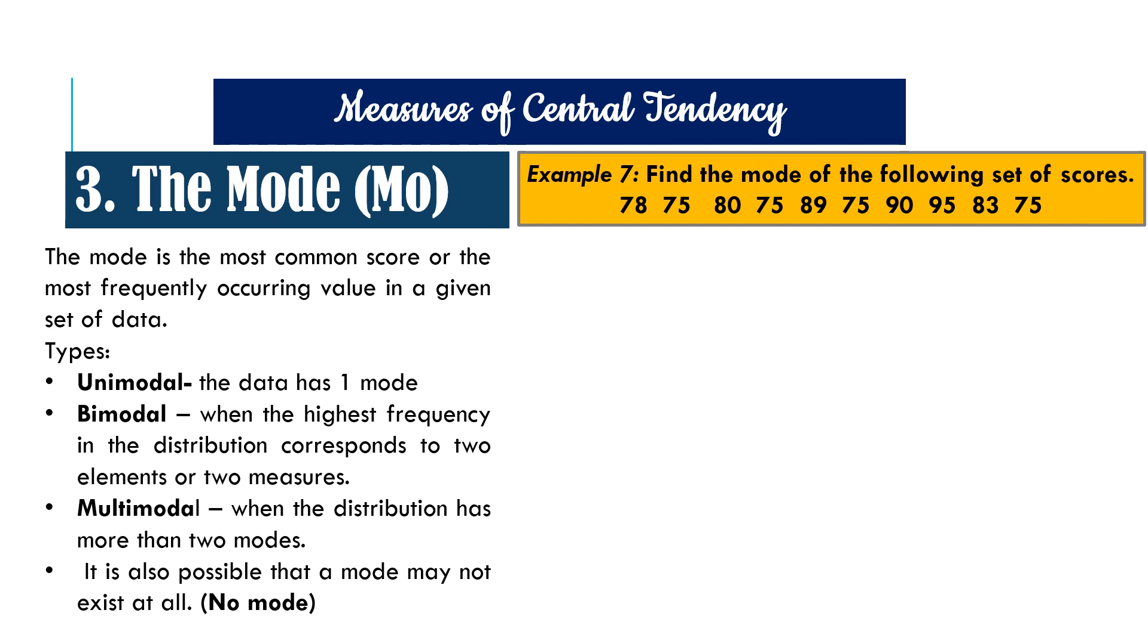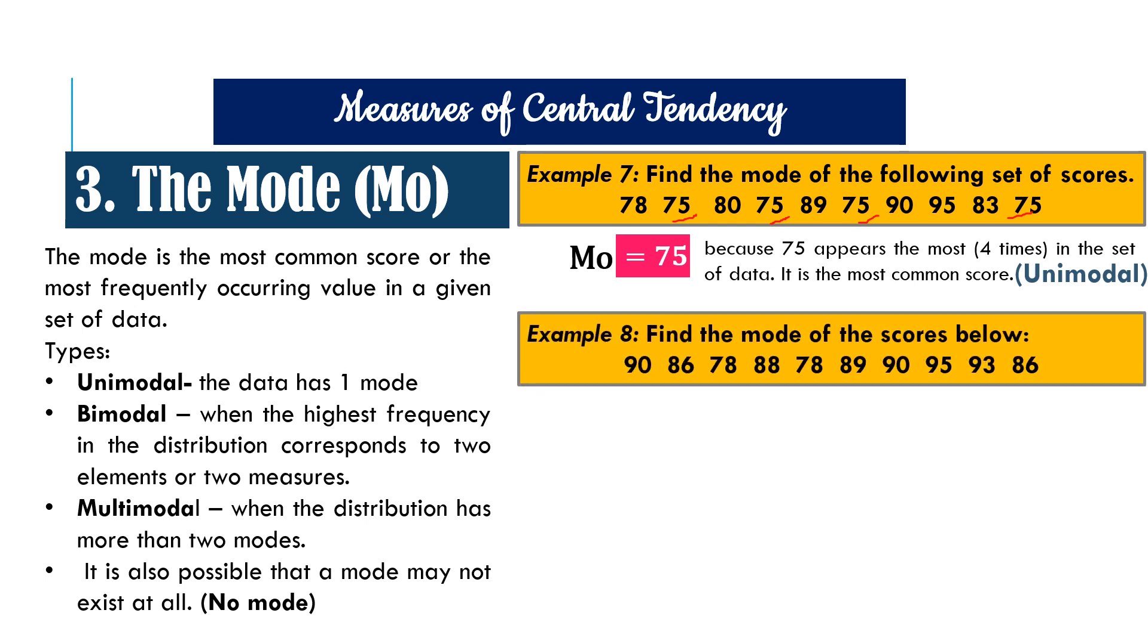Let us look at the following examples. Example seven. Find the mode of the following set of scores. So the scores are as follows: 78, 75, 80, 75, 89, 75, 90, 95, 83, and 75. So which among those scores appeared most frequently? The answer is 75 because 75 appeared four times. So the mode for example seven is 75. Since it has only one mode, the type of mode is unimodal.